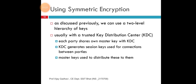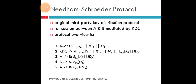Using symmetric encryption, as discussed previously, we can use a two-level hierarchy of keys, usually with a trusted Key Distribution Center — KDC. Each party shares its own master key with the KDC. It generates a session key used for connection between parties. The master key is used to distribute it to them. This uses the original third-party key distribution protocol, which is the major advantage of direct digital signatures and according to digital signature standards as defined by the National Institute of Standards and Technology.